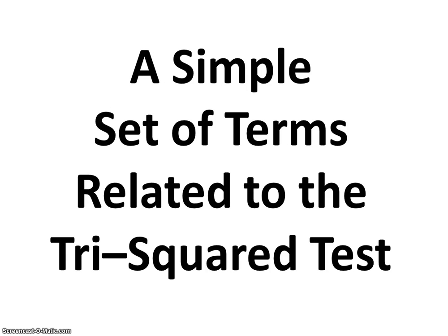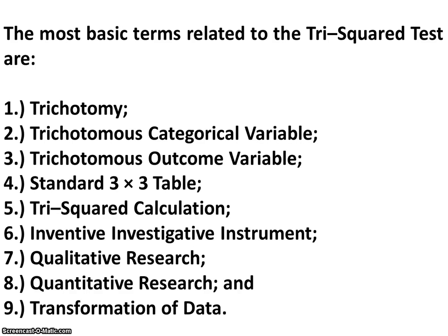A simple set of terms related to the Tri-Squared Test. The most basic terms are: 1. Trichotomy; 2. Trichotomous categorical variables; 3. Trichotomous outcome variable; 4. Standard 3x3 table; 5. Tri-Squared Calculation; 6. Inventive Investigative Instrument; 7. Qualitative Research; 8. Quantitative Research; 9. Transformation of Data.